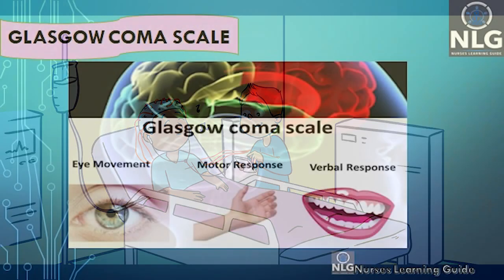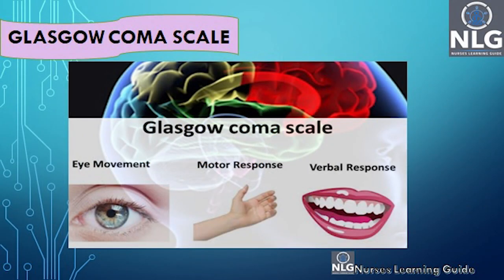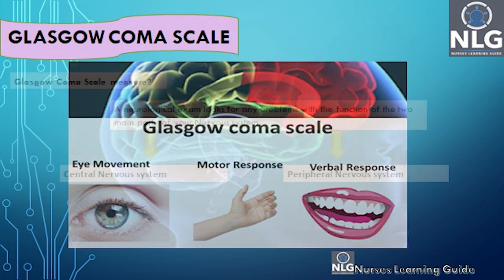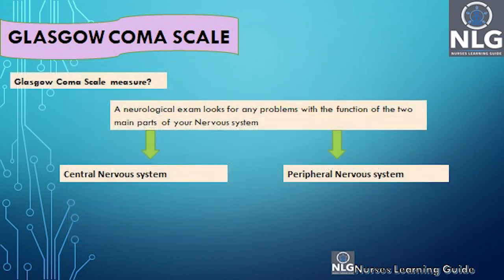The Glasgow Coma Scale is the most widely used tool for measuring comas and decreases in consciousness. In this scale there are three components: eye movement, motor response, and verbal response. Let's see how we are going to score them and what is included in the Glasgow Coma Scale.